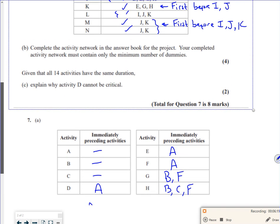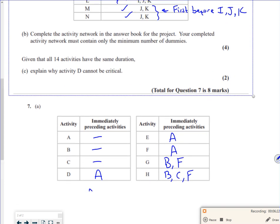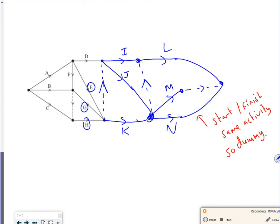Let's have a look at this last bit here. So it says, given that all 14 activities have the same duration, explain why D can't be critical. So let's have a look. So what I tend to do is just, in my mind, work out how I can get there. So I kind of set all the activities to have a duration of one. So this is for C. So if you imagine that all activities have a duration of one. Now B and F, where's B and F? There. G can't start until B and F are finished. And F depends on A. So the earliest G can start would be at 2.